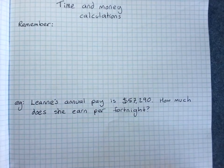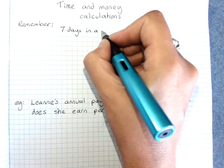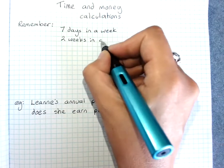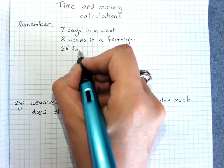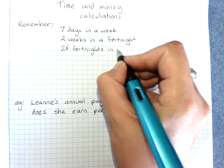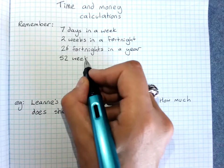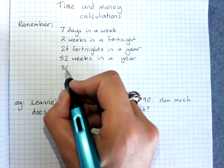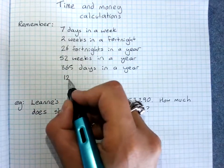To solve these, we do have to remember how many days are in a week and things like that. So we have 7 days in a week, 2 weeks in a fortnight, 26 fortnights in a year, 52 weeks in a year, and we might also need 365 days in a year or 12 months in a year.